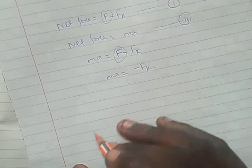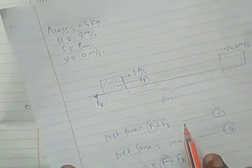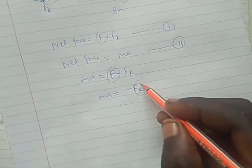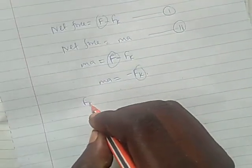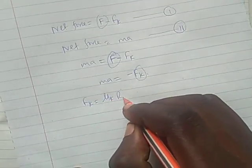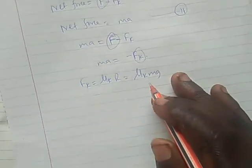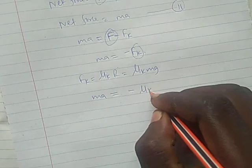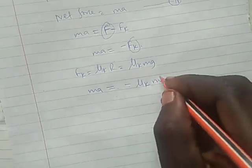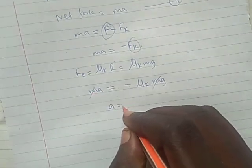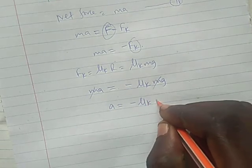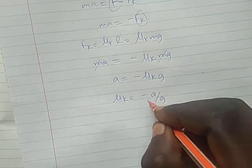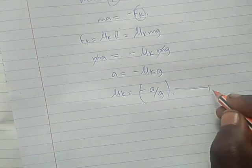Now kwanza tumepewa U, V, pamoja na S na mass ya object tumepewa. It is required a coefficient of kinetic friction from here. So that is to say FK is equal to mu K R which is equal to mu K mg. Mass times acceleration would be equal to negative mu K then mg. So M and M will cancel, acceleration would be equal to negative mu K then G. Solving for mu K, it will be equal to negative acceleration divided by G. Let's call this equation three.